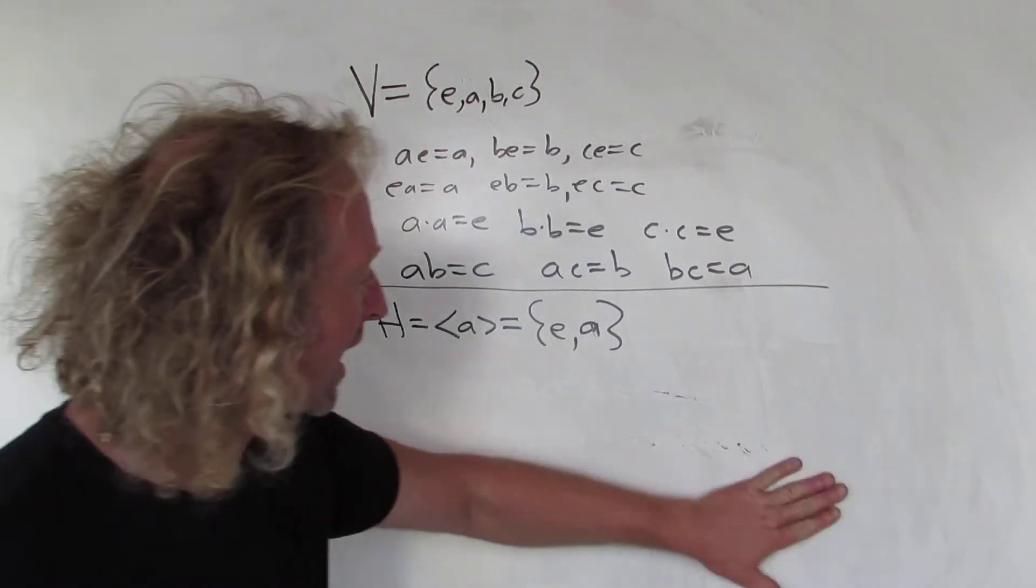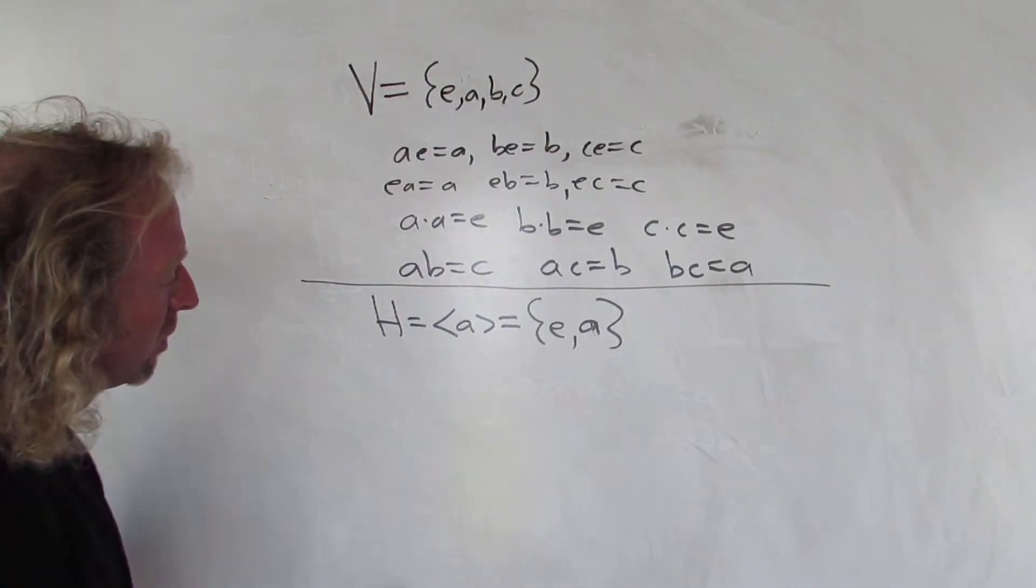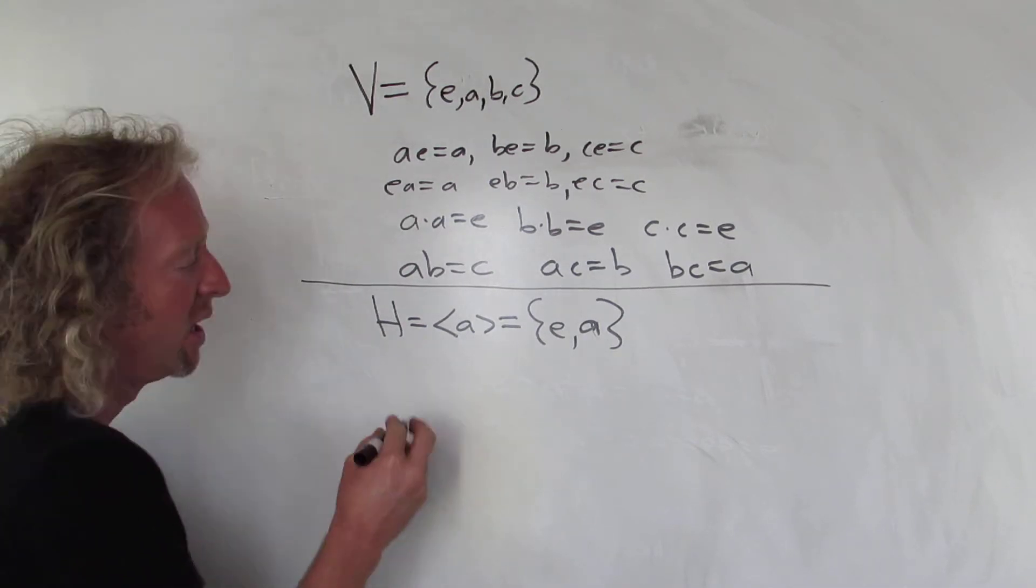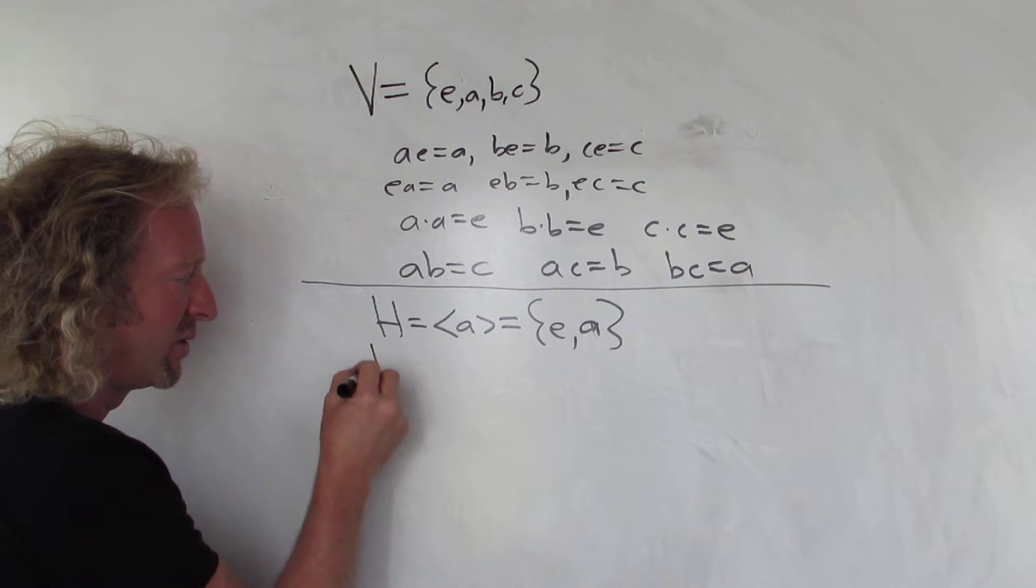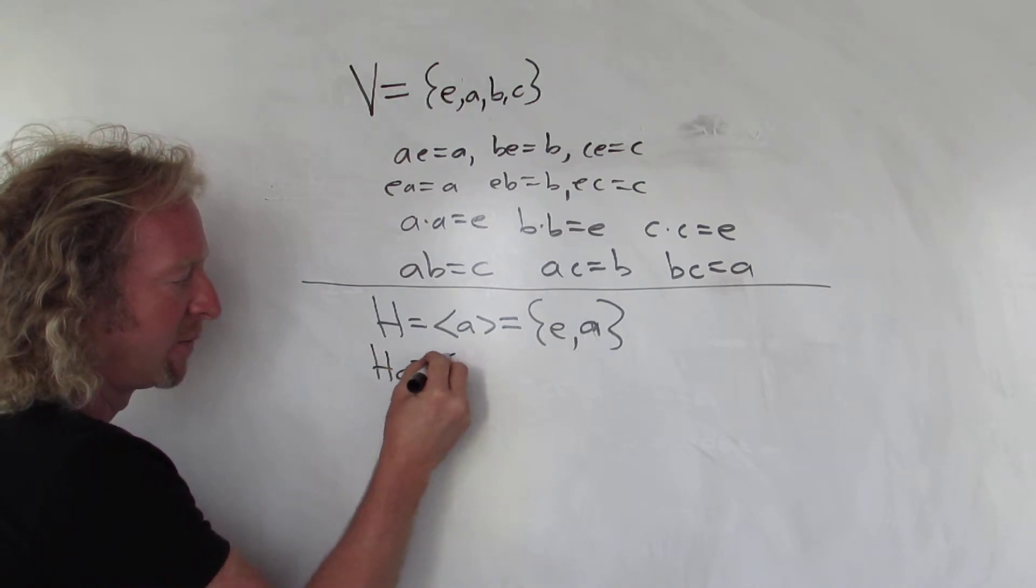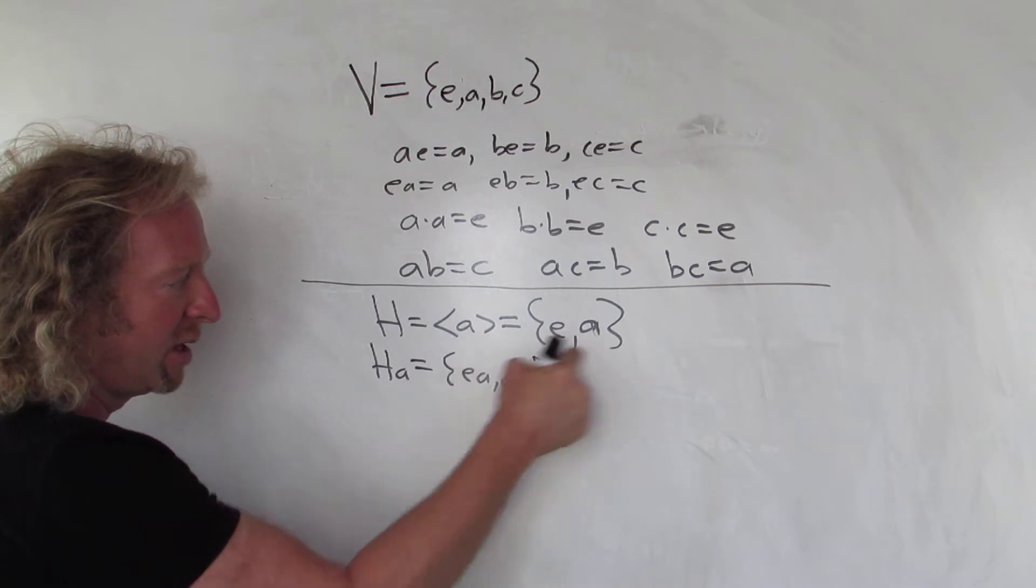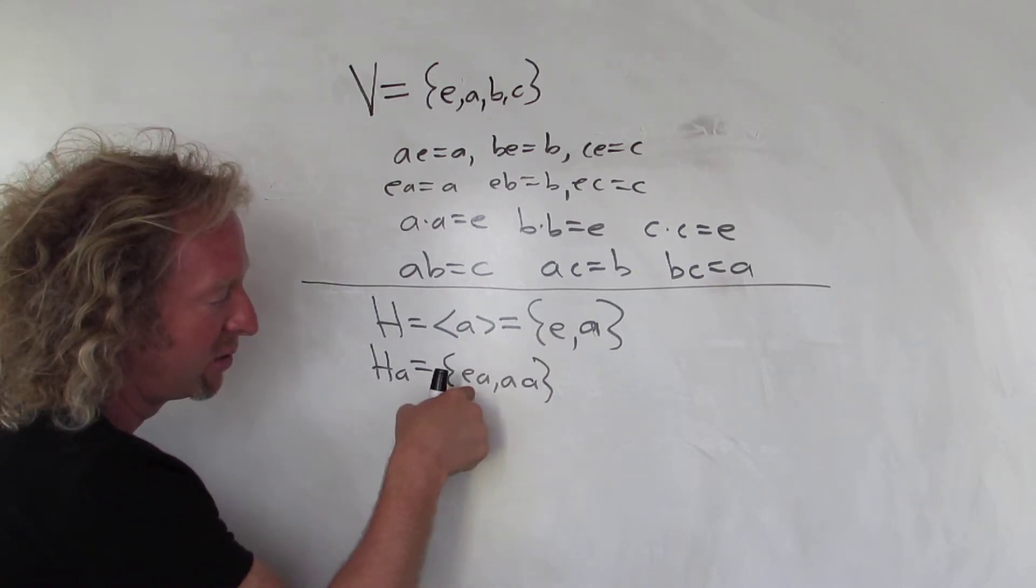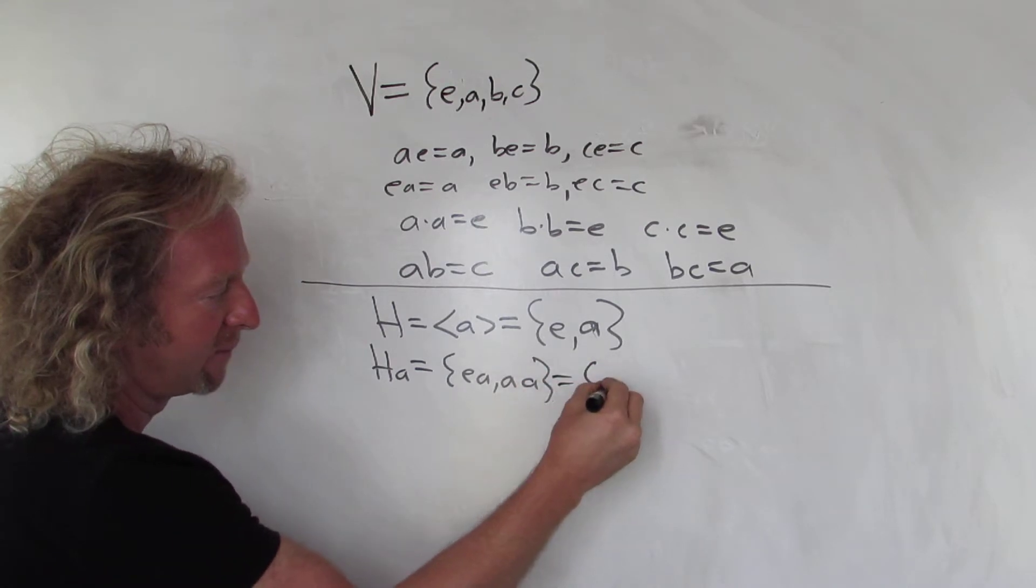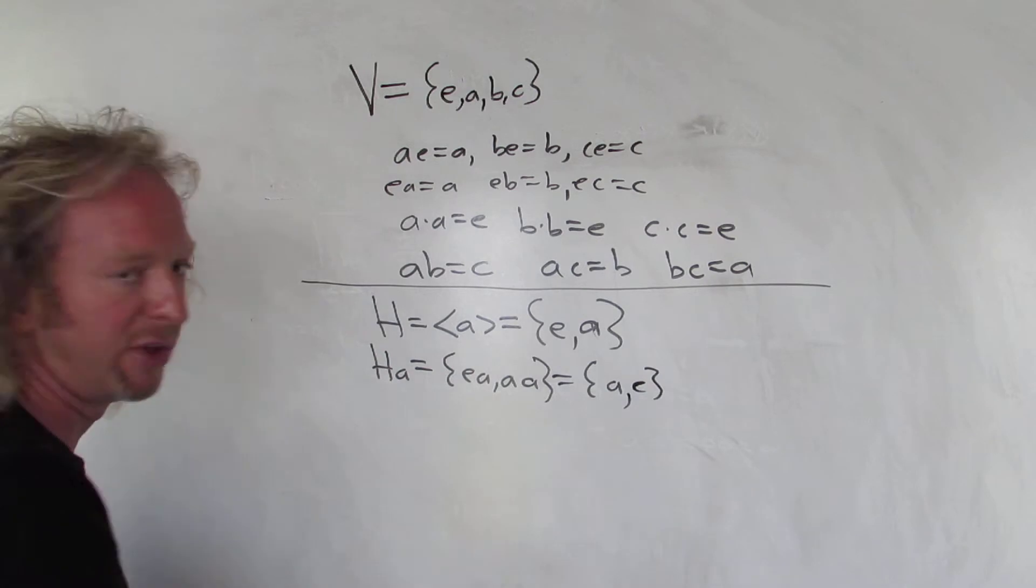So let's look at the cosets, the right cosets of H and V in this example. So one coset is just H. If you look at HA, well, A is in H, so it's the same. And you can convince yourself, right? Look, HA, that's EA, AA. You just multiply each element on the right by A. That's your right coset, HA. So EA is just A. AA is A squared, which is E, so nothing new there.